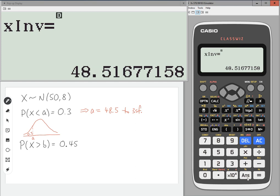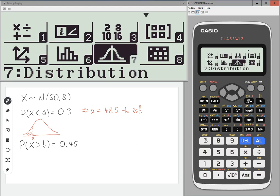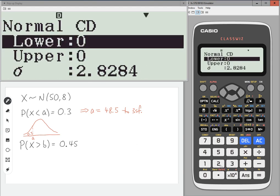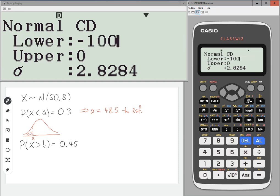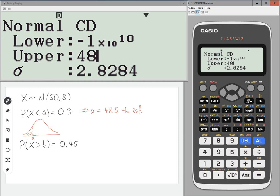Just to confirm that, just to show you can confirm that if you're not sure, go to number 7 on your calculator and go to normal CD. And we can type in the lower value as minus a large number and we're going up to 48.5.